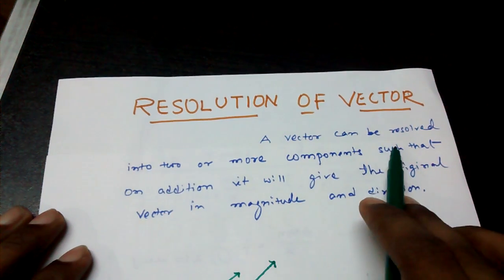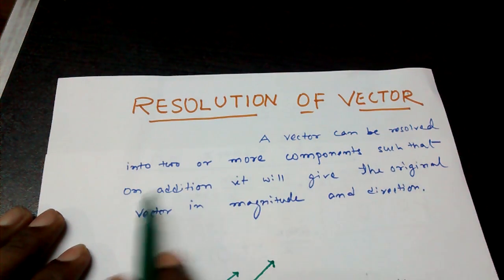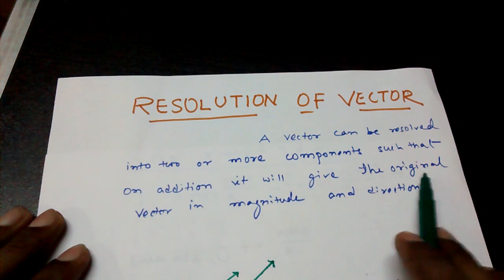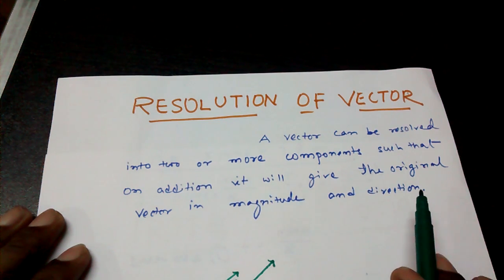A vector can be resolved into two or more components such that on addition it will give the original vector in magnitude and direction. This is the definition of the resolution of vector.